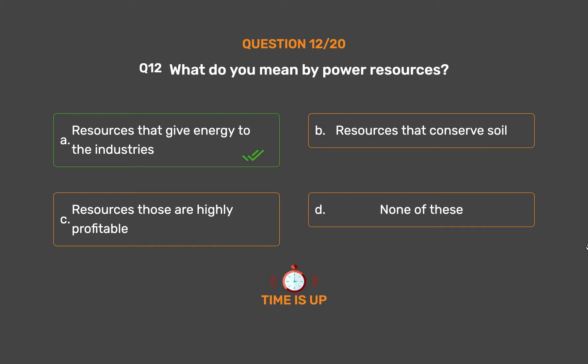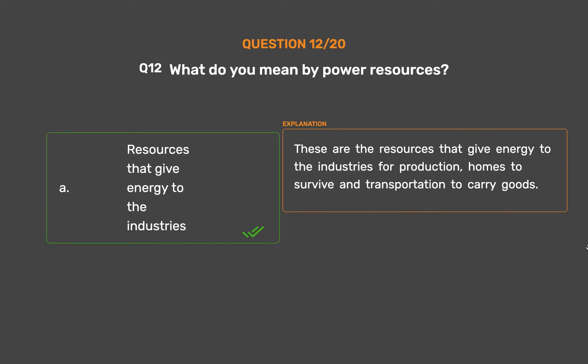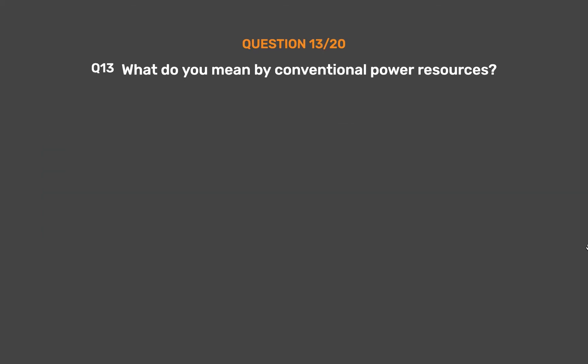The correct answer is Option A: Resources that give energy to the industries. These are the resources that give energy to industries for production, homes to survive, and transportation to carry goods.